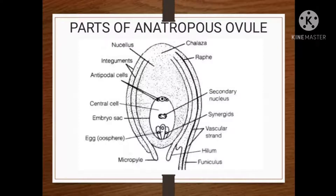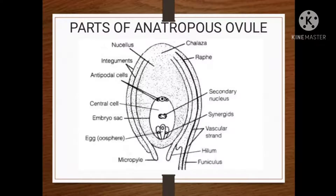Each ovule develops as a small projection called nucellus over the placenta. The integuments surround the nucellus from all sides except at the top, where a small opening is left — it is called the micropyle. The end of the ovule where the micropyle is present is called the micropylar end, and wherever the chalaza is present, that is called the chalazal end.